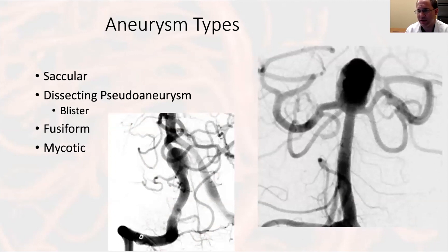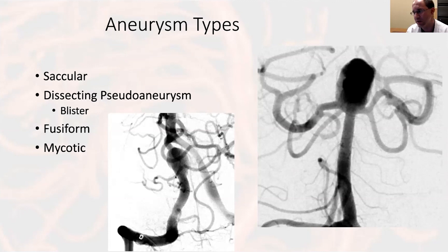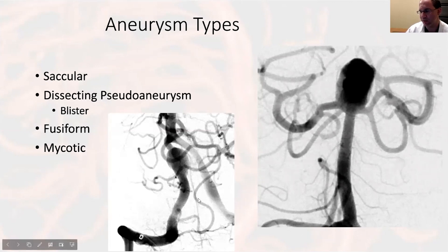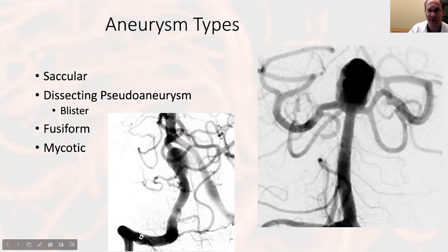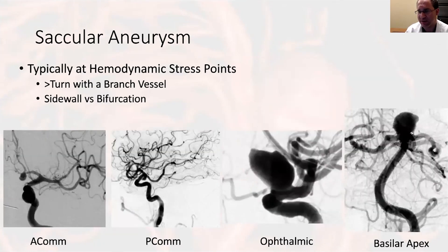I like to think of aneurysms as stratified into four types: saccular aneurysms, which occur at hemodynamic stress points and will be the focus of this discussion; dissecting pseudoaneurysms, which in extreme form are blisters; fusiform aneurysms, illustrated here as a fusiform vertebral aneurysm with the interspinal coming right out of it; and finally mycotic or infectious aneurysms.